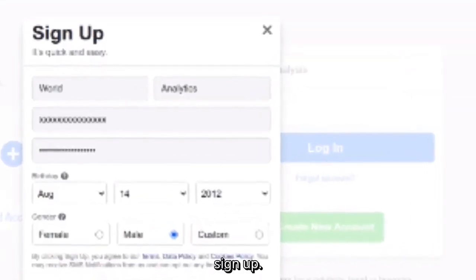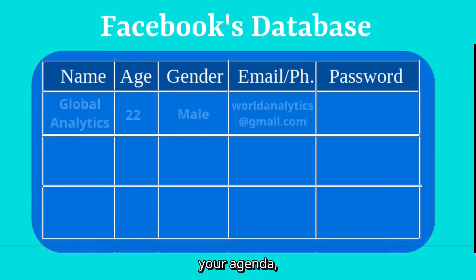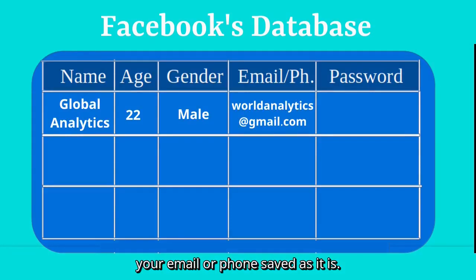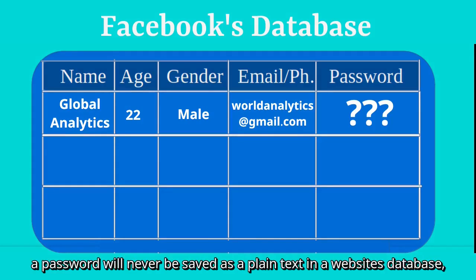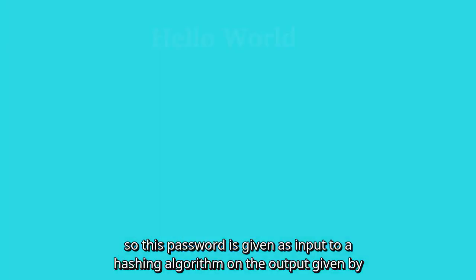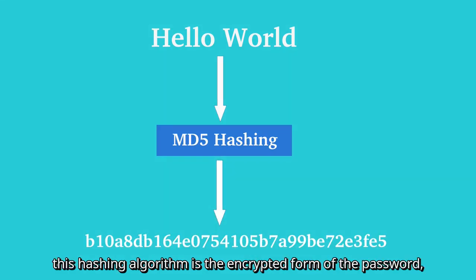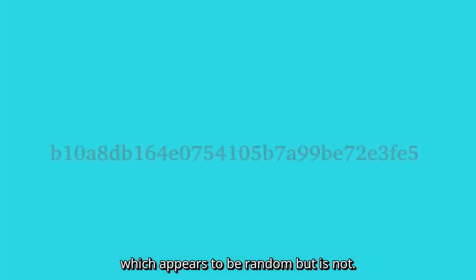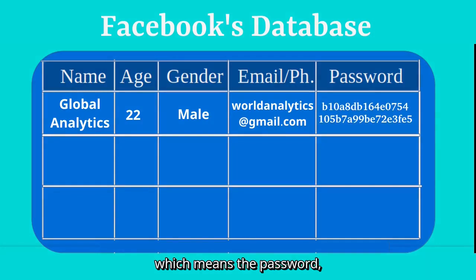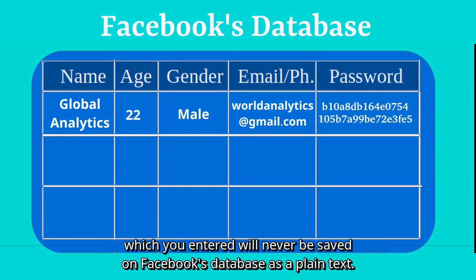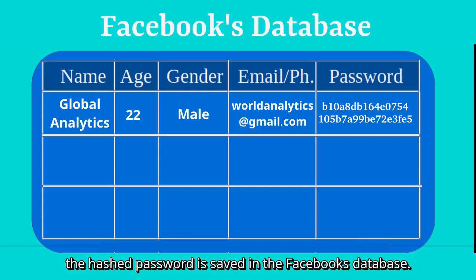Once you click on sign up, this data is sent to Facebook's backend database. In Facebook's database, your name, gender, age, and email or phone is saved as it is. But as for the password — a password will never be saved as plain text. Instead, the password is given as input to a hashing algorithm, and the output is the encrypted form of the password. This hashed password is saved in Facebook's database, not the plain text.